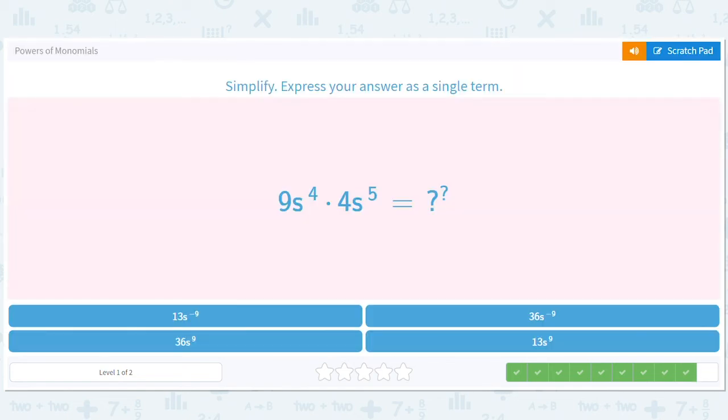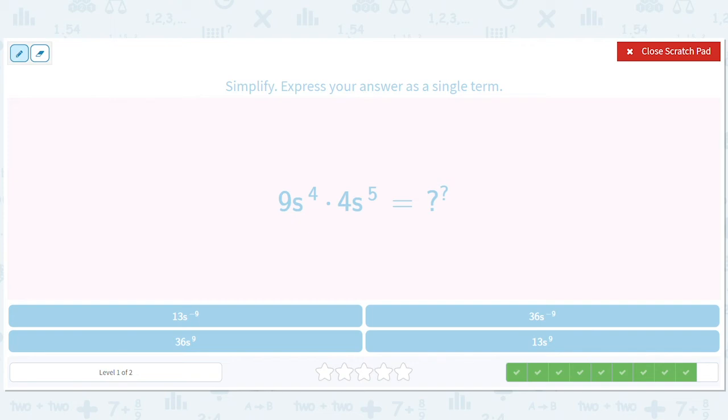All right. And how about nine and four here? So that's 36. We'll have four and five. So we'll give us S to the four plus five, which will give us 36S to the ninth.